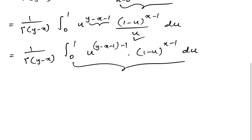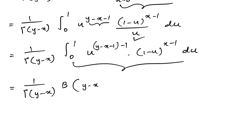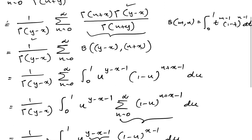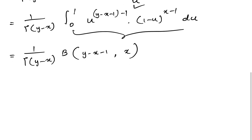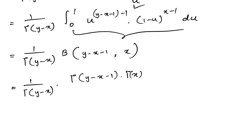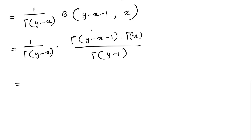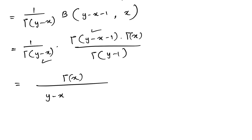Now, again, we know we have the beta function. So we have 1 over gamma(y-x) times beta(y-x-1, x). Again, we can convert the beta function using gamma functions. So we have 1 over gamma(y-x) times gamma(y-x-1) times gamma(x) over gamma(y-1). The gamma(x) terms get cancelled, giving us gamma(x) over (y-x-1) times gamma(y-1).